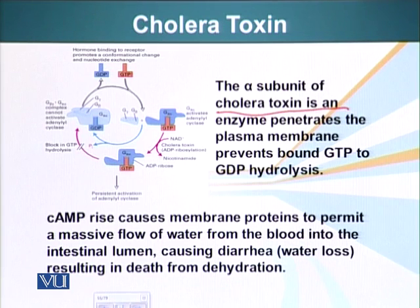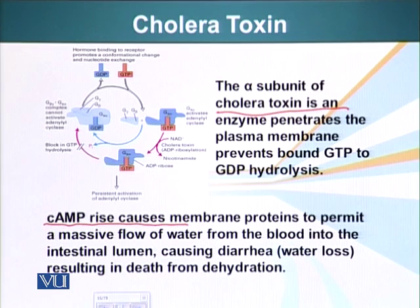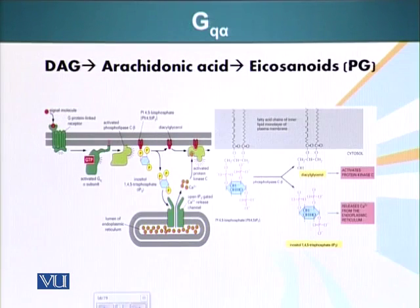Cholera toxin prevents this GTP hydrolysis, resulting in a sustained rise of cyclic AMP. The net result is a massive flow of water from the blood into the intestinal lumen, which causes diarrhea and water loss that can ultimately result in death.